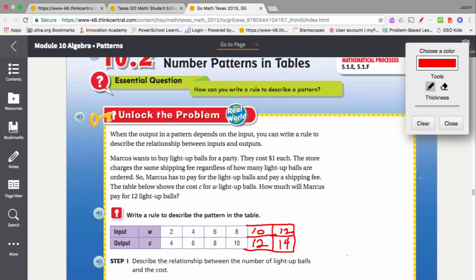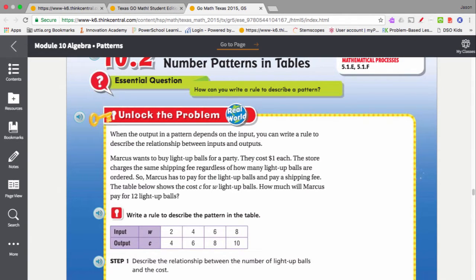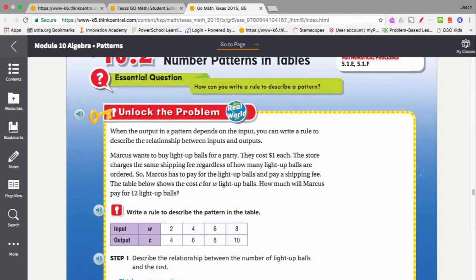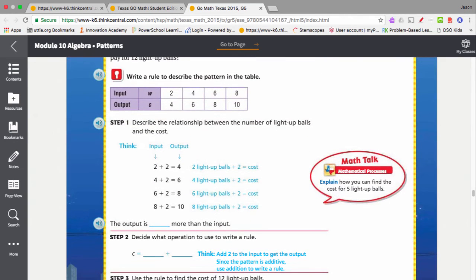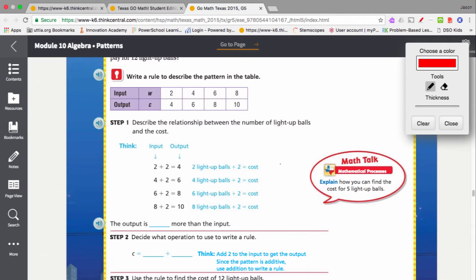But what we really want to know is what is the relationship between W and C? How can we express that as an equation? So we know that each time we're adding two to the input. So the output is two more than the input. So what operation are we going to do? If it's two more, that means we're adding.